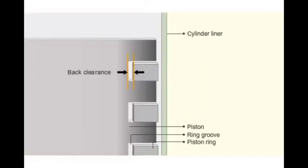Back clearance is the clearance from inner diameter of the piston ring to inside diameter of the groove. Thickness of the ring should be less than the groove depth so that the outer ring face is inside the ring groove.